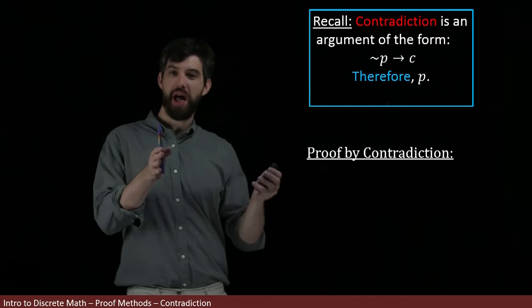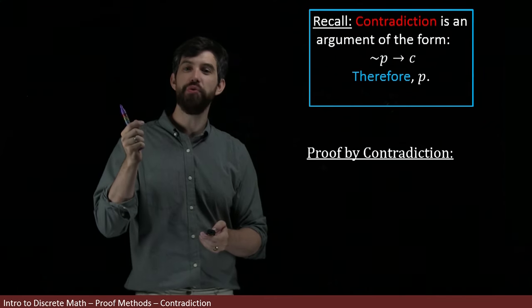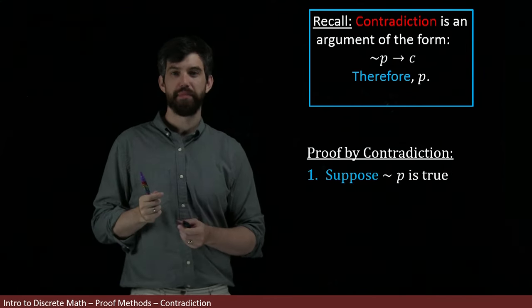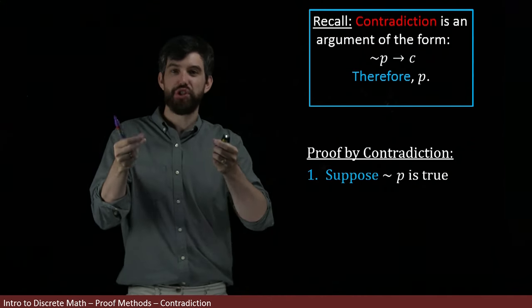So the different steps behind proof by contradiction are going to be first, I'm going to assume not P is true. In other words, I'm assuming that my statement I'm trying to prove, my P, I'm assuming that that is false.